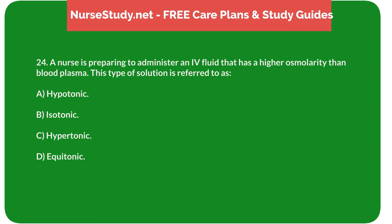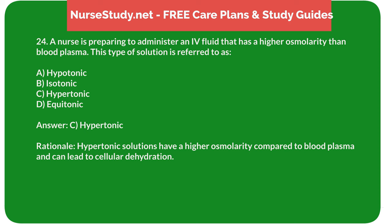Question 24: A nurse is preparing to administer an IV fluid that has a higher osmolarity than blood plasma. This type of solution is referred to as: A. Hypotonic. B. Isotonic. C. Hypertonic. D. Equitonic. Answer: C. Hypertonic. Rationale: Hypertonic solutions have a higher osmolarity compared to blood plasma and can lead to cellular dehydration.